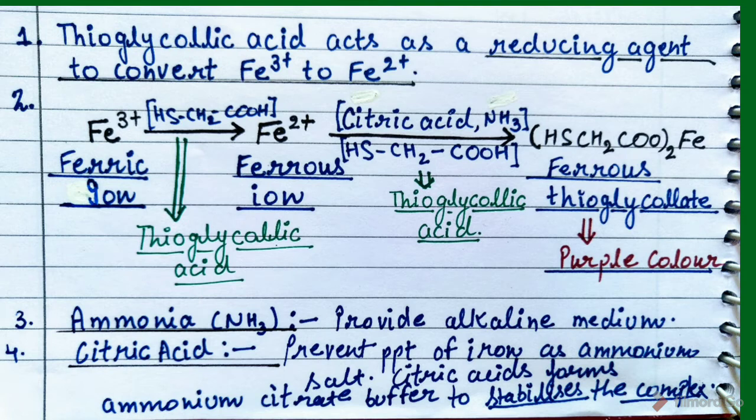Now I will discuss the role of citric acid in the limit test of iron. Citric acid prevents the precipitation of iron as an ammonium salt, and it also forms an ammonium citrate buffer to stabilize the complex. So there are two roles of citric acid.